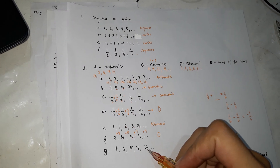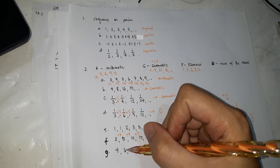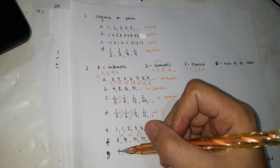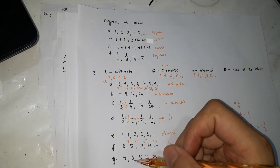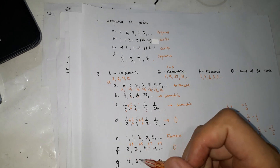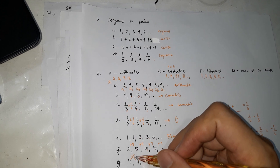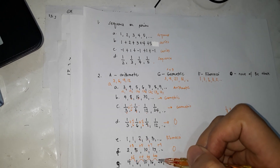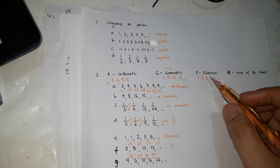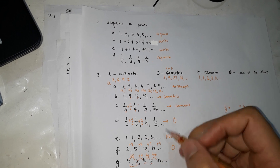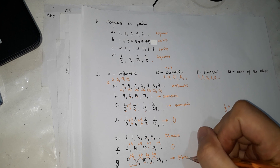Another example: 4, 6, 10, 16, 26. It's not geometric — multiplying 4 by 3/2 gives 6, but 6 times 3/2 is not 10. It's not arithmetic — you'd add 2, then 4, then 6, then 10, so no common difference. Let's check Fibonacci: 4 plus 6 is 10, 6 plus 10 is 16, 10 plus 16 is 26. Yes — this is a Fibonacci sequence.